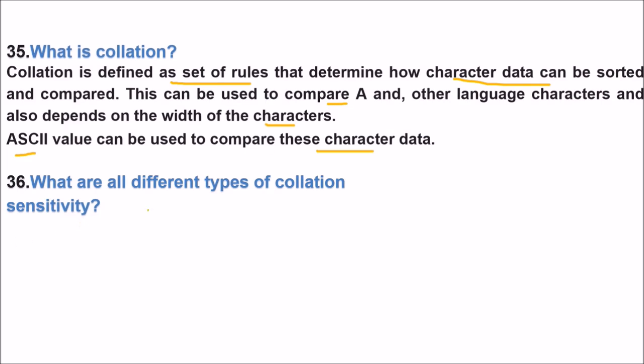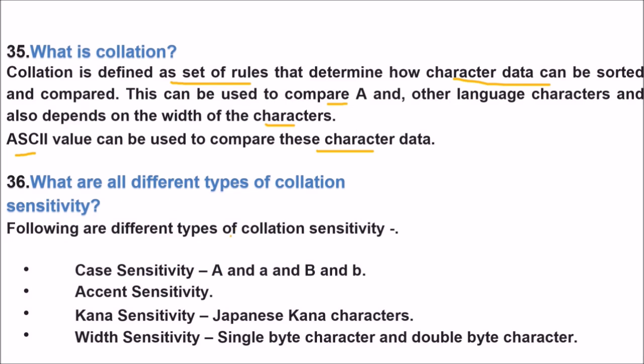What are different types of collation sensitivity? So these are the types of collation sensitivity: case sensitivity, like they are both A but one is uppercase and one is lowercase. Accent sensitivity, Kana sensitivity like Japanese kana characters, width sensitivity. Since you can have single byte character also and double byte character also.